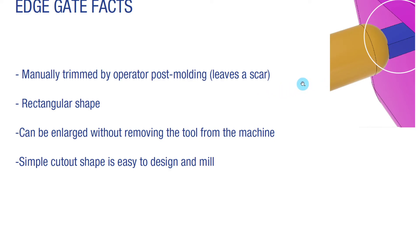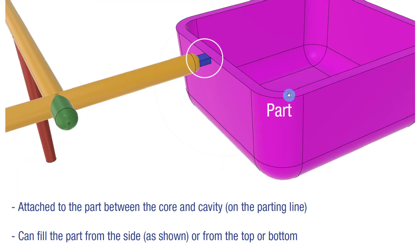The simple cutout shape is easy to design and mill because it's just one channel. It's attached to the part between the core and the cavity, right here where the core and cavity meet.